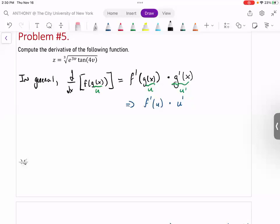It's going to be a nasty problem. All right, so we have z equals the cube root of e to the power of 3v times tangent of 4v.